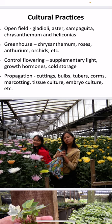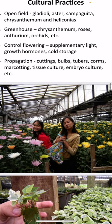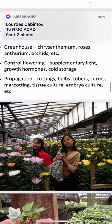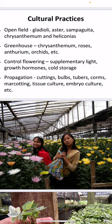Cultural practices for ornamental production include open field production such as gladiolus, aster, sampaguita, chrysanthemum, and heliconias. In the greenhouse, chrysanthemum, roses, anthurium, and orchids can also be produced. As shown in the photo — my picture and my best friend Dr. Ubao — this is a chrysanthemum farm in Baguio.